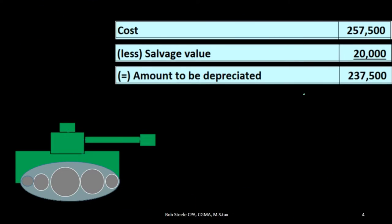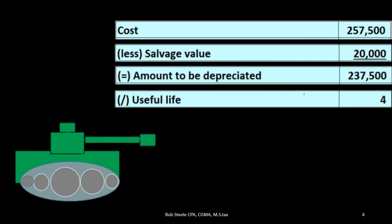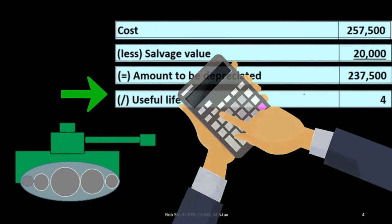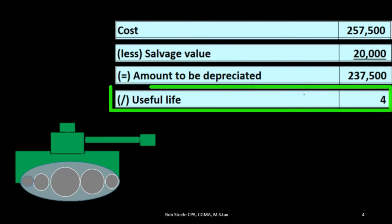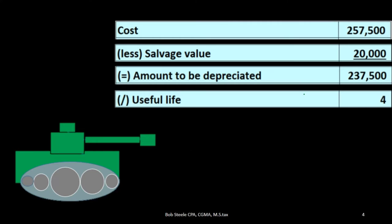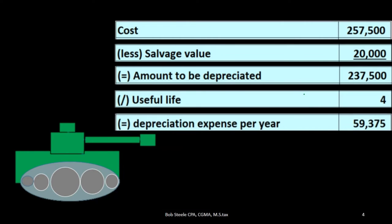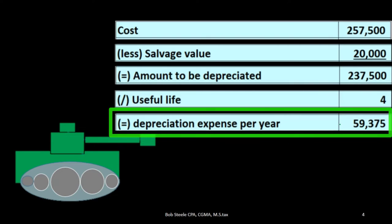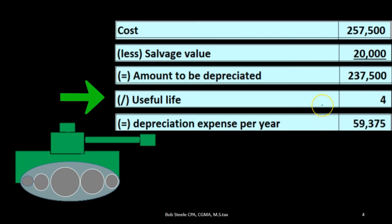Then we divide by the useful life, in this case four years, estimating how long we're going to use this equipment to help generate revenue. That gives us the yearly depreciation. In this case, we have $59,375 that we will depreciate each year over the useful life of four years.